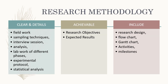Research methodologies can be divided into three parts. The first is clear and detailed — this includes your fieldwork, sampling technique, interview session, lab work of different phases, experimental protocol, and statistical analysis. The second is that it should be achievable — can this methodology achieve your research objectives or expected results? The third is that the methodology should include research design, flowchart, Gantt chart, and activities and milestones.